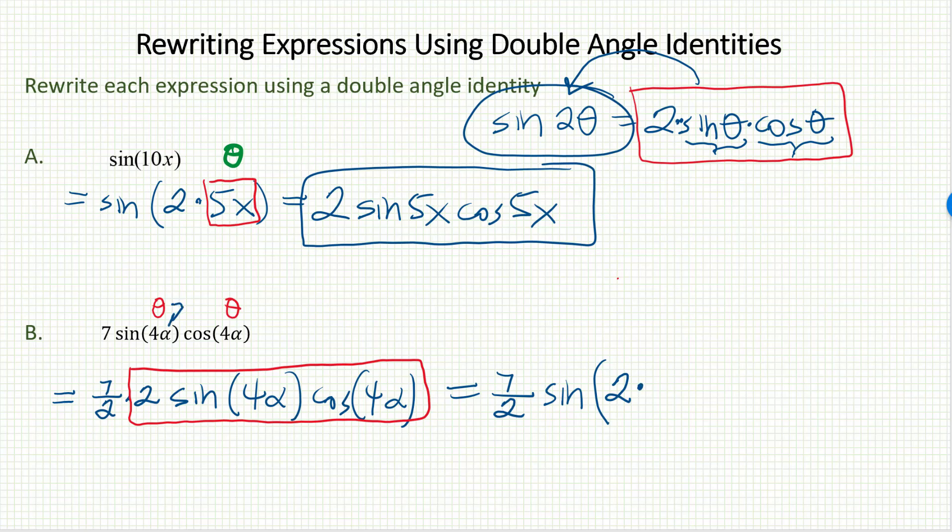What was my θ? Oh yeah, my θ in this problem is 4α. When I clean that up I get 7 halves sine of 8α. And we've done it. We've rewritten the original expression using the double angle identity.